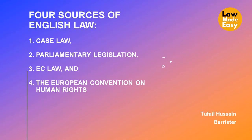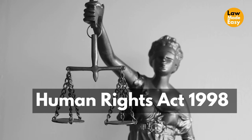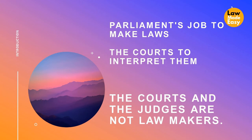Interpretation of statutes — why is it necessary? There are four sources of English law; though EC law will no longer be a source after Brexit, the main sources used to be case law, parliamentary legislation, EC law, and the European Convention on Human Rights. The European Convention on Human Rights was brought into UK law under the Human Rights Act 1998. So the main sources of English law now are case law, parliamentary legislation, and the Human Rights Act 1998, though its fountain is the European Convention on Human Rights.